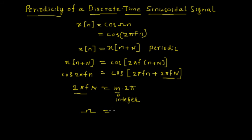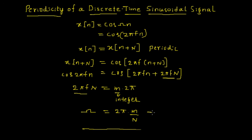Replacing 2πf with ω again, we get the expression: ω = 2π·m / N. This is the condition for a discrete-time sinusoidal signal to be periodic. The condition is that its angular frequency ω must be a rational multiple of 2π, where a rational number is a ratio of integers.